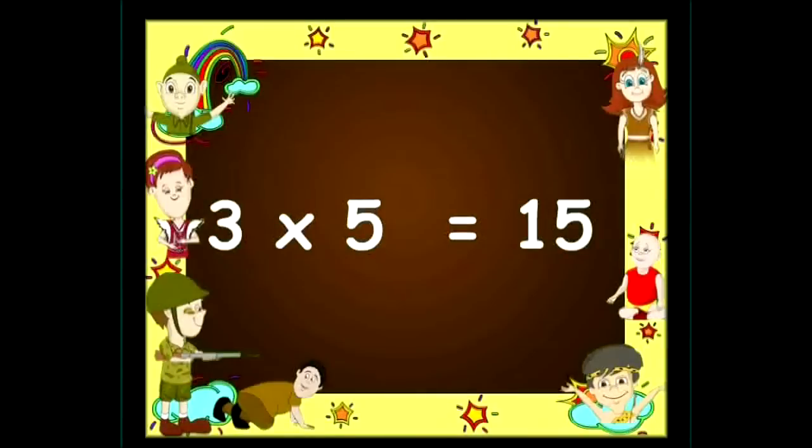Three fives are fifteen, three sixes are eighteen, three sevens are twenty-one, and three eights are twenty-four.